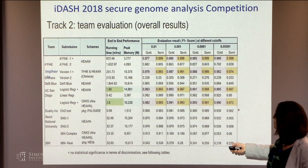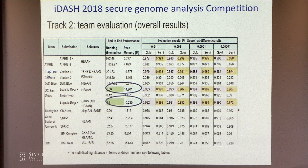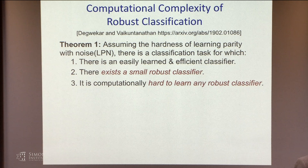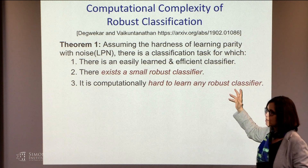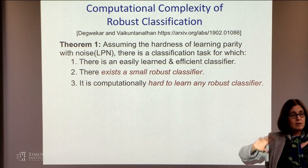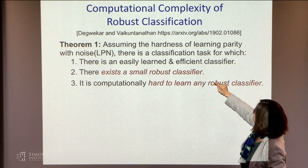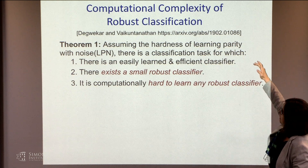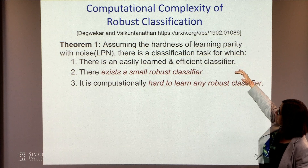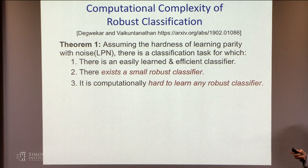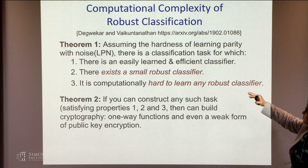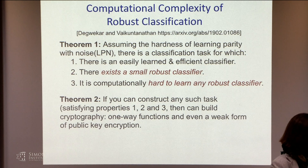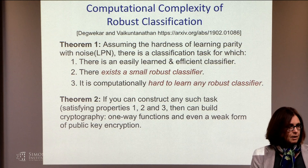The running times are amazing — you can do things in seconds. It's not just homomorphic encryption. This morning, there was a result from Microsoft about robust classification. There is a new result by Vinod and Akshay showing that assuming the hardness of learning parity with noise — which is related to lattice stuff — there exists a classification task for which: there are easily learned efficient classifiers, there is a small robust classifier, and it is computationally hard to learn any robust classifier. And if you construct such a task, you can build cryptography. Understanding these problems is relevant beyond computing on encrypted data — it's also related to robust classification.